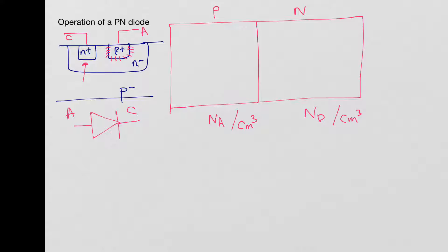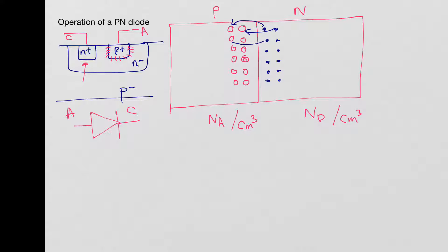We know that there is an abundance of holes on the P side and an abundance of electrons on the N side. Once this junction is formed, the electrons diffuse from the N side and go occupy the holes on the P side.